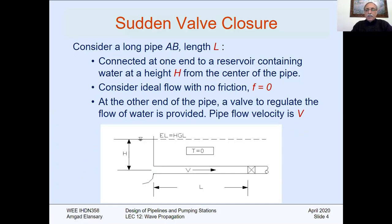To complete this example, we take a pipe of length L connected at one end to an upstream reservoir, and at the downstream end there is a valve. The reservoir has a water level at height H measured from the centerline of the pipe. We consider the pipeline to have no friction — ideal flow, F equals zero.